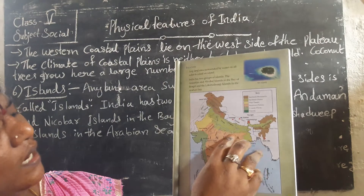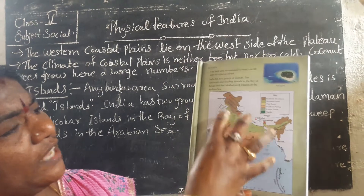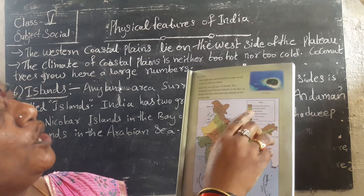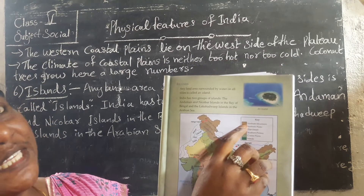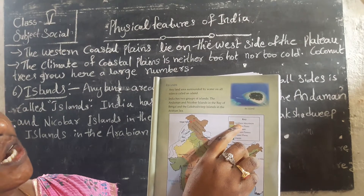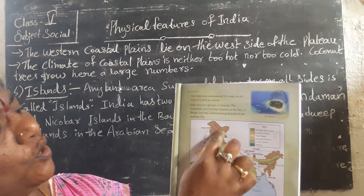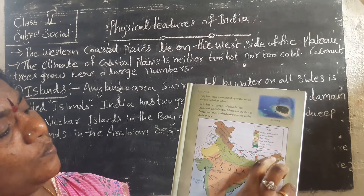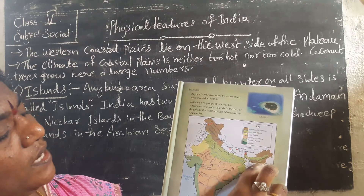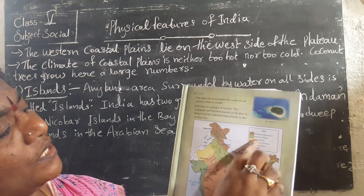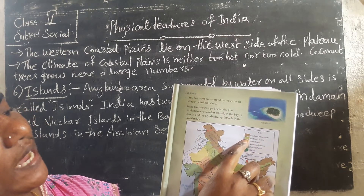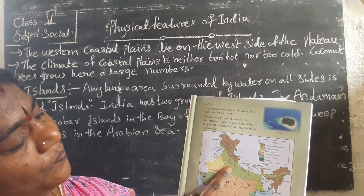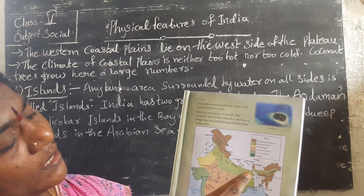In our textbook there is a colorful sketch picture. In that, brown color represents the Northern Mountains. Light green represents the Northern Plains, located here.